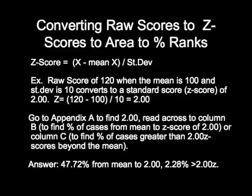Now, let's see how well you can read the normal curve table. Let's assume you had a raw score of 120 which, when converted to a Z-score, became a Z-score of 2.0.